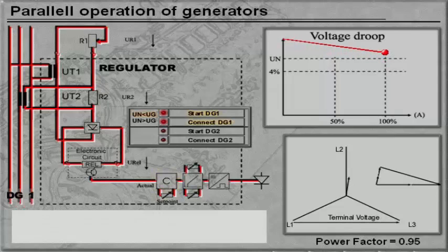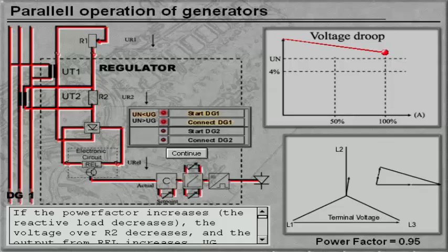If the power factor increases, the voltage over R2 decreases, and the output from REL increases. UG exceeds UN, and the comparator will give an output to the thyristor, which will open it to limit the excitation current until UG equals UN.